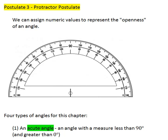The protractor postulate is very similar to the ruler postulate that we saw with line segments. What it tells us is that if we have an angle, we can assign a numeric value to represent the openness of that angle.